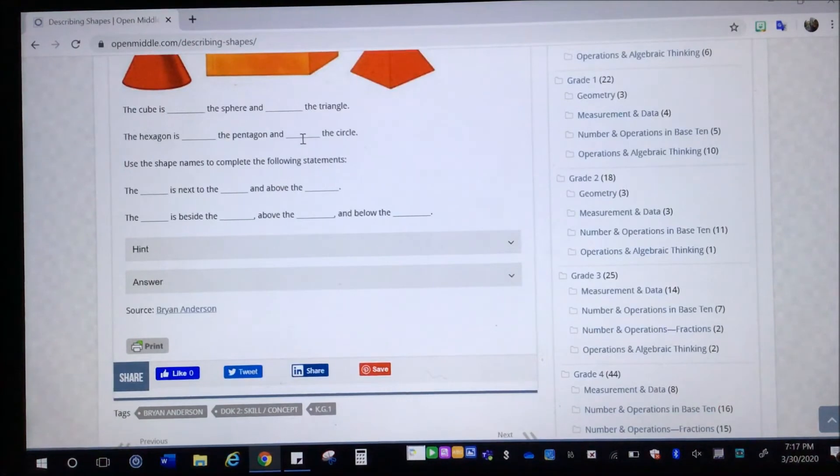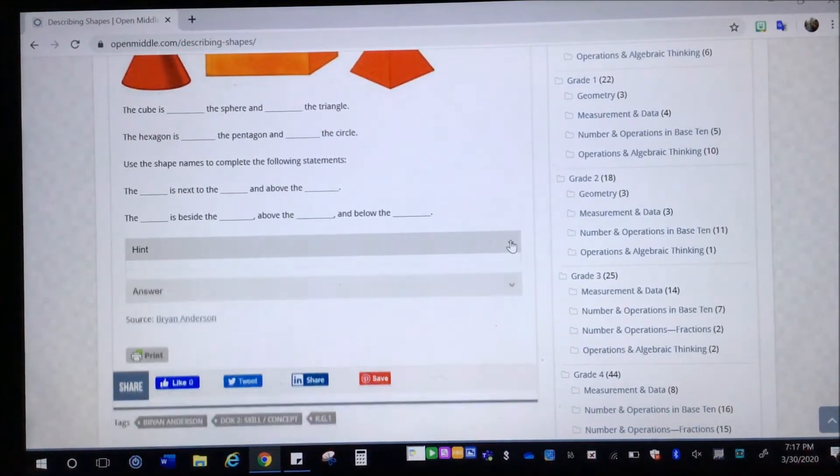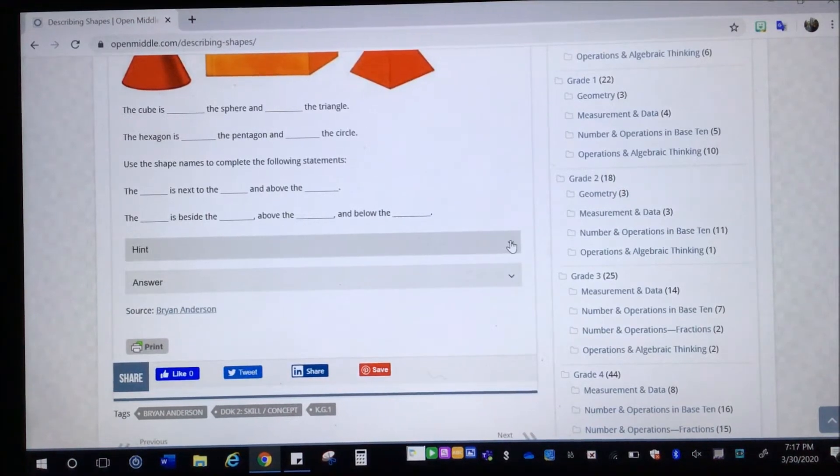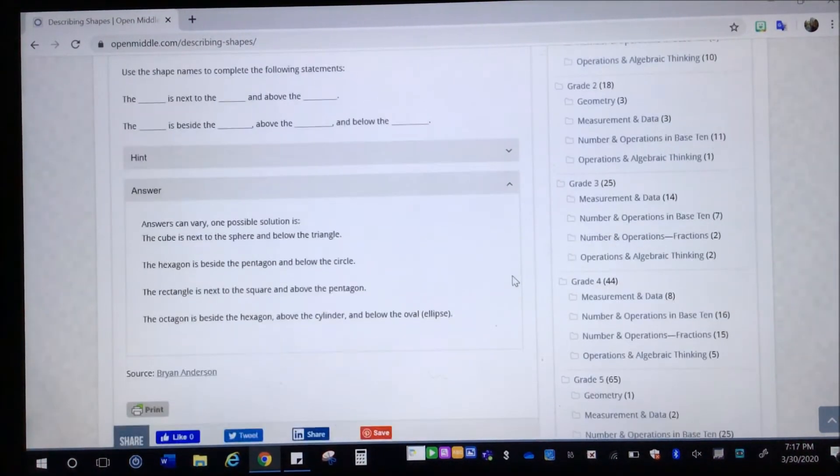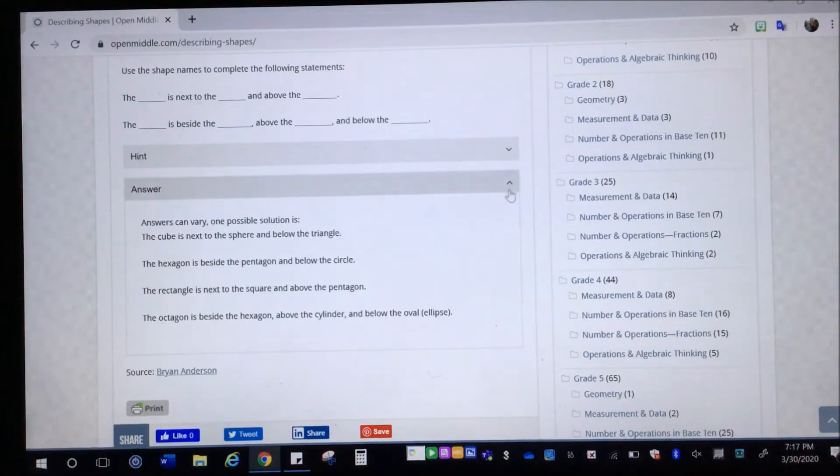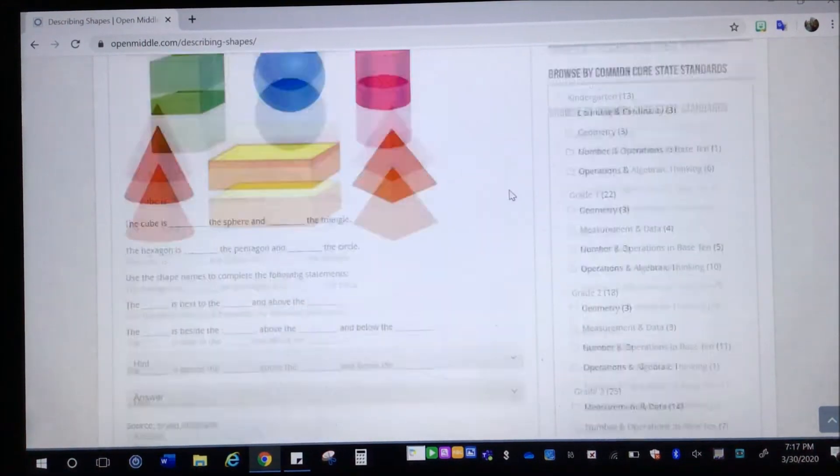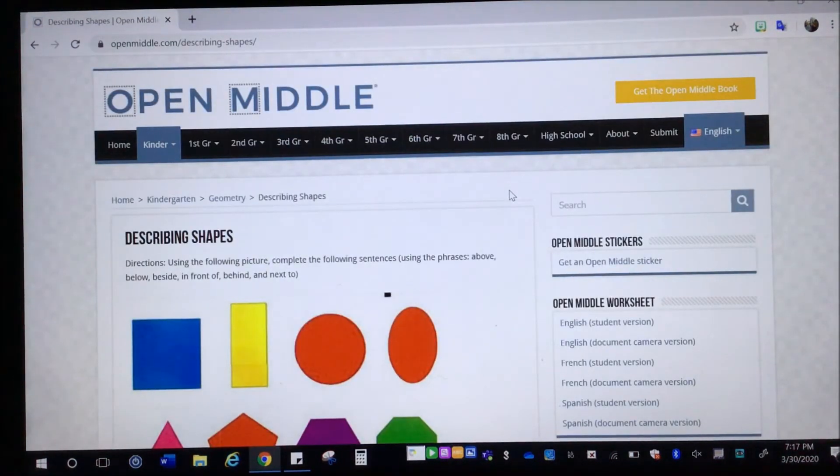Now, every single one also has a hint. Oh, this one does not have a hint. That's a bad example. Most of them have a hint and then they all share answers. And if the answers will vary, they will often either tell you there are other possible answers or they will give you all of the possible answers in some cases.